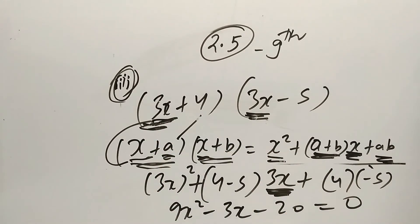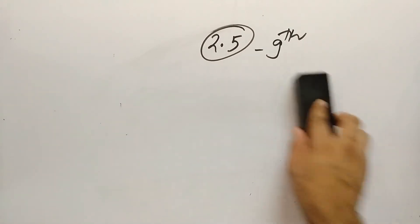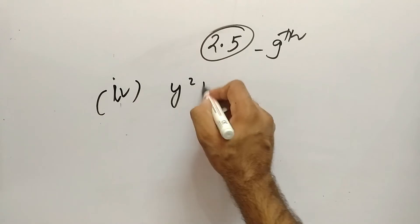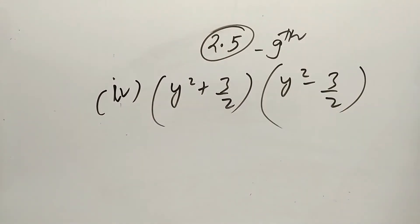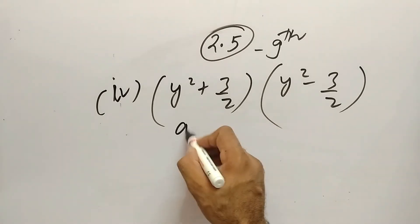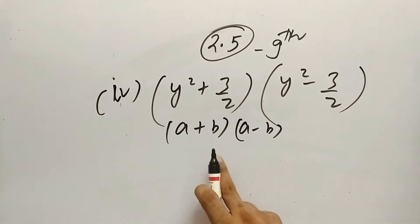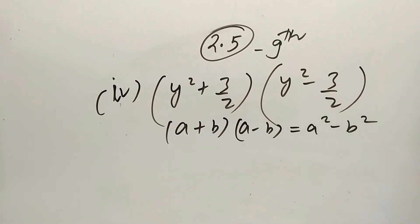Now we will solve the fourth part of the first question. In the fourth part, we will use a different identity. The fourth question is something like this.